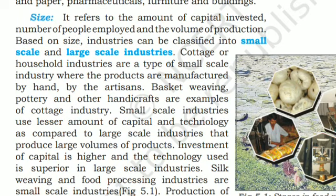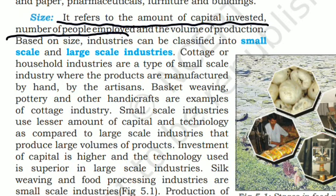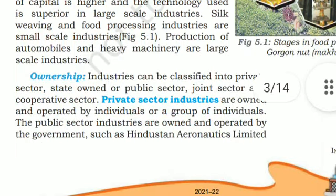On the basis of size, industries are divided into small-scale and large-scale. Size refers to the amount of capital invested, number of people employed, and volume of production. Cottage or household industries are a type of small-scale industry where products are manufactured by hand by artisans. Basket weaving, pottery, and other handicrafts are examples of cottage industry. Small-scale industries use lesser amounts of capital and technology. Silk weaving and food processing are small-scale industries, while production of automobiles and heavy machinery are large-scale industries.